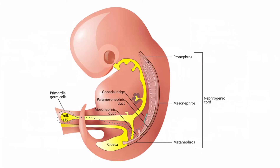Here is a lateral view of the fetus, and we can see the nephrogenic cord right here. This structure goes through three stages: the pronephros stage, mesonephros stage, and metanephros stage. In this image, we can see all three stages, but in reality it starts cranially and then moves downward, becoming first the mesonephros and finally the metanephros. Think of this image as a time-lapse of the nephrogenic cord developing over a several-week period, which allows us to see all three structures simultaneously.